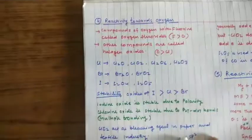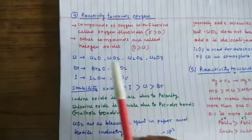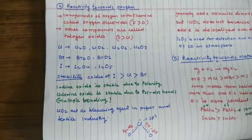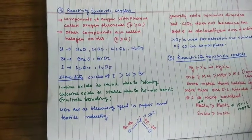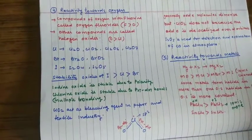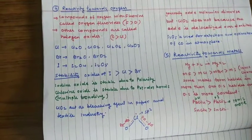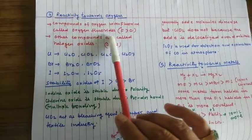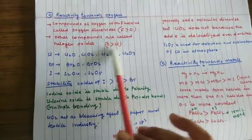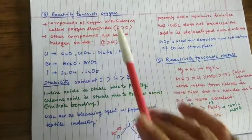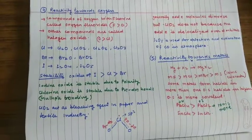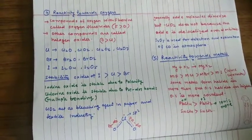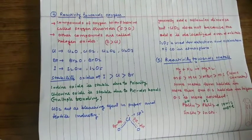If we see the reactivity towards oxygen, then halogens react with oxygen to form halogen oxide. The compound of fluorine with oxygen is not called as oxide, but it is called as fluoride because fluorine is more electronegative than oxygen. They repel each other, so bond exists between them as weaker bond.